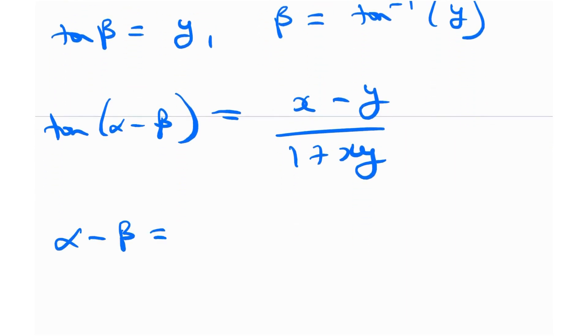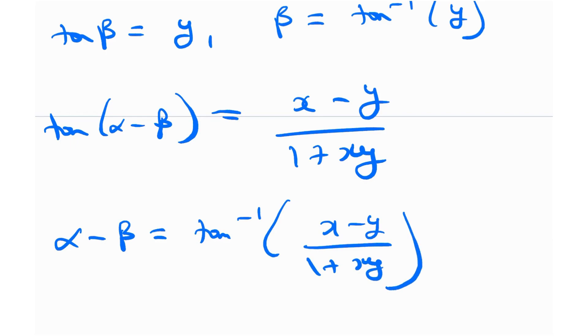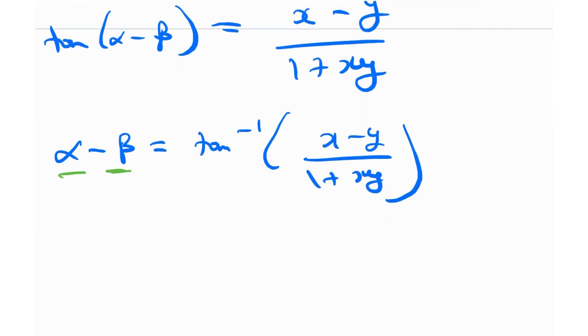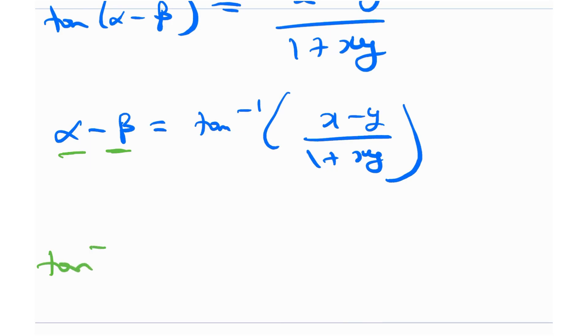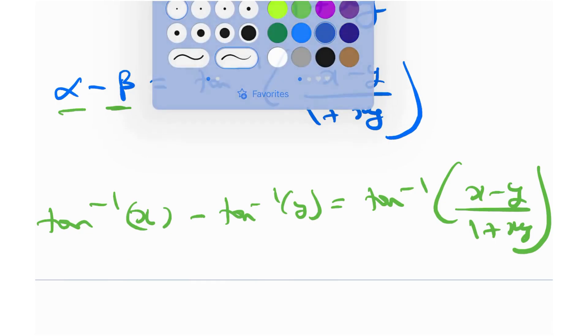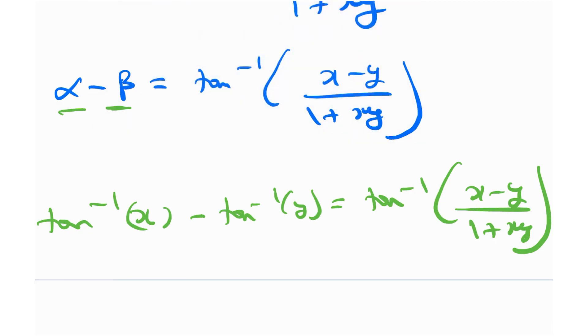Or if I take tangent inverse on both sides, I'll get alpha minus beta is tangent inverse x minus y divided by 1 plus xy. So here, if I just plug that in, I'll get tan inverse x minus tan inverse y is equal to tan inverse x minus y divided by 1 plus xy, which is what I had written up top. This is the property and hence we have proven this. So these are a couple of results that you should know in order to solve this question.